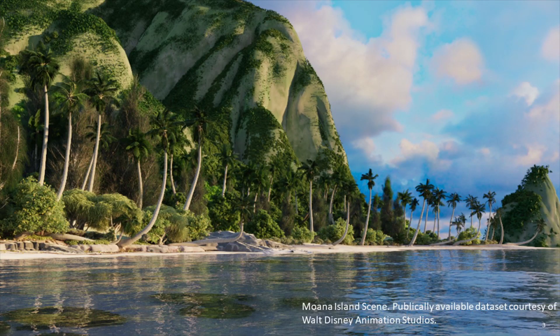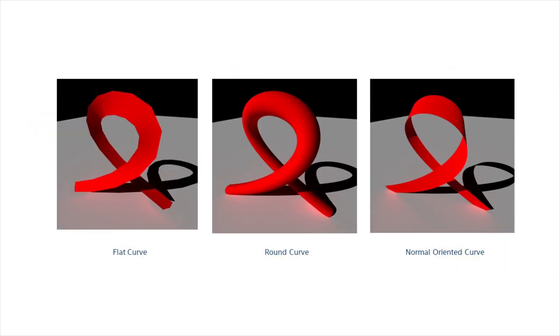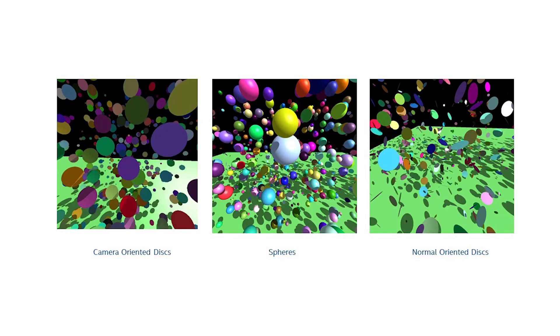Embree is a feature-rich library which supports ray and point queries, multi-segment motion blur, multi-level instancing, as well as various geometric primitives such as different representations for triangle meshes, curves of different flavors, polynomial basis functions, and different types of point geometries.